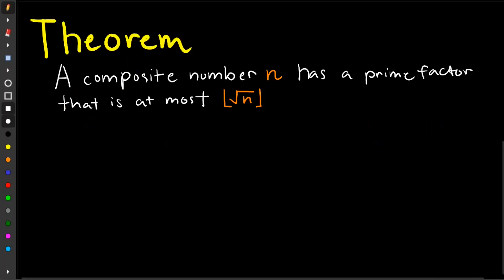Our theorem states that a composite number n has a prime factor that is at most the floor of square root of n.